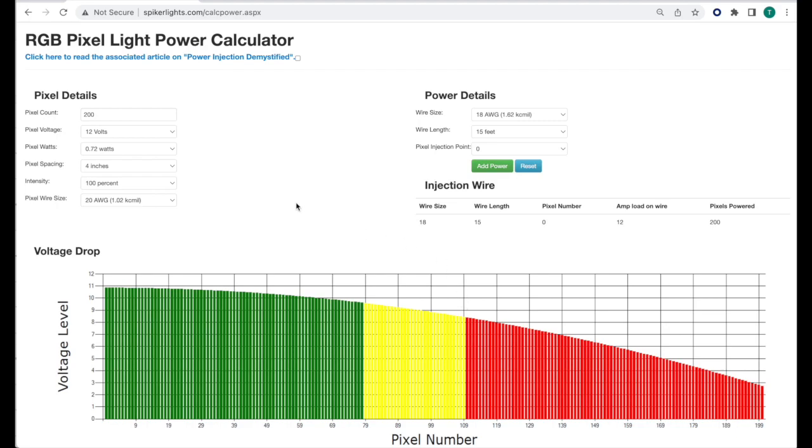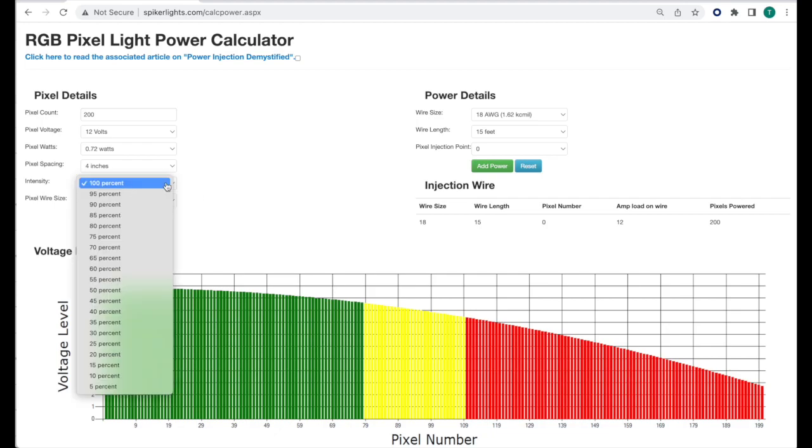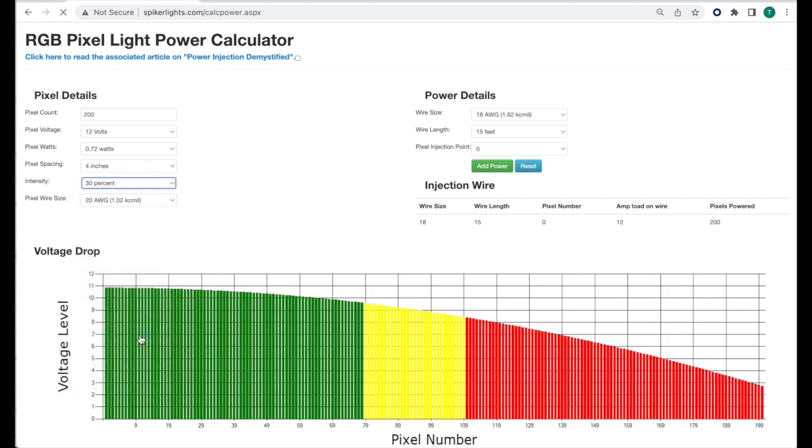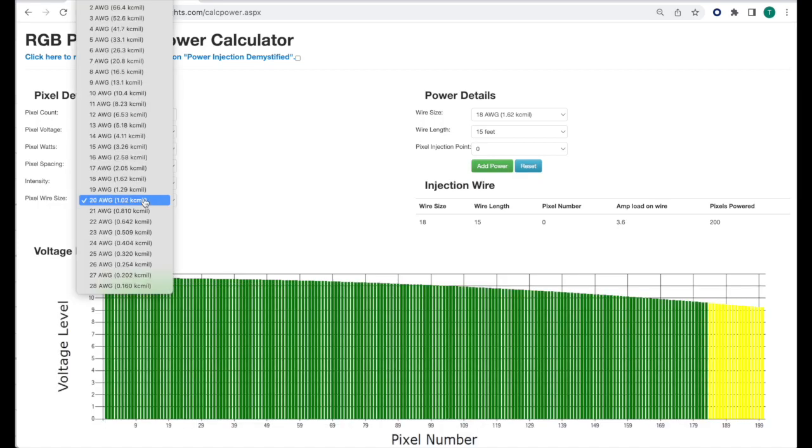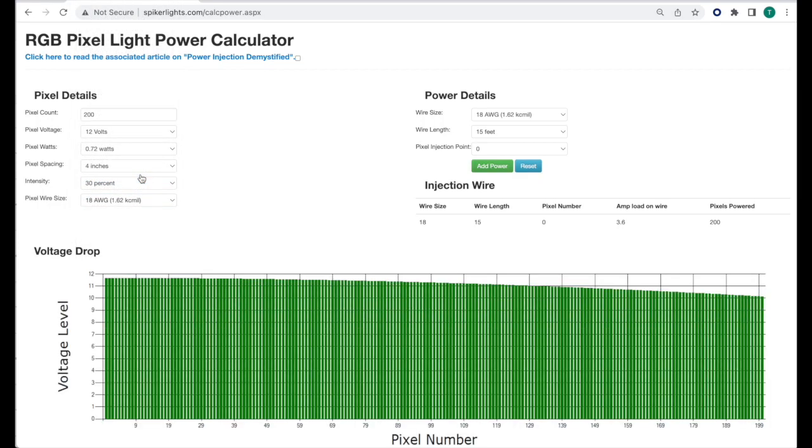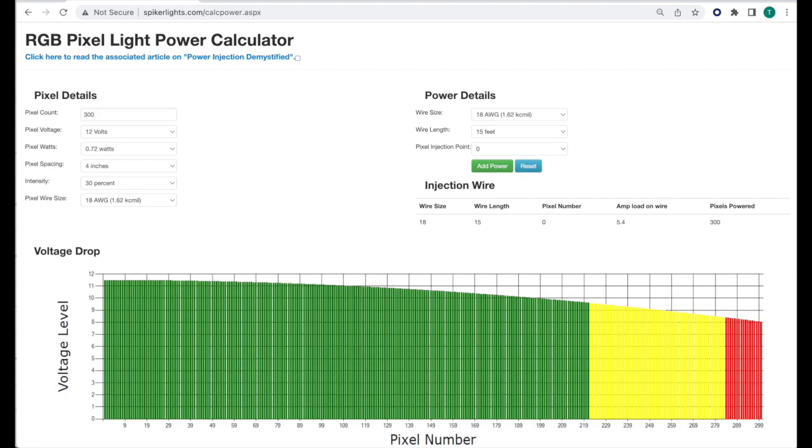Let's change a few of the parameters again. For example, I run my lights at 30%. My pixels are 18 gauge wire. Even with changing those, we still have significant drop once we hit about 285 pixels. The graph becomes red and power injection is needed. This is a great tool and I recommend using this calculator when thinking about power injection.